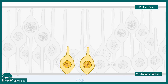Each of these daughter cells can divide symmetrically. In the initial phase of nervous system development, the divisions are more symmetric, which leads to a greater number of stem cells. This is known as transit amplification — just as you have to first amplify your money before investing, the nervous system increases the number of stem cells before giving rise to neurons.